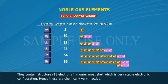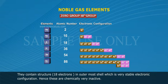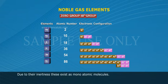They contain an octet structure — 18 electrons in the outermost shell — which is a very stable electronic configuration. Hence, these are chemically very inactive. Due to their inertness, these exist as monoatomic molecules.